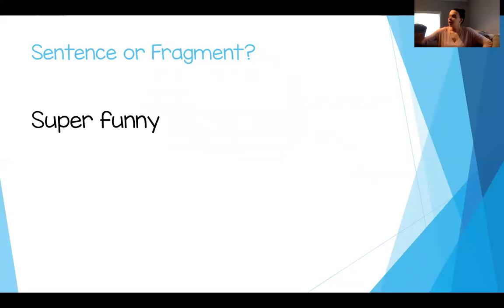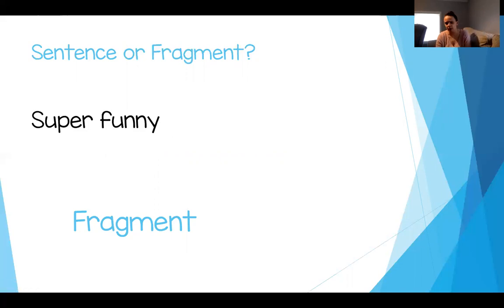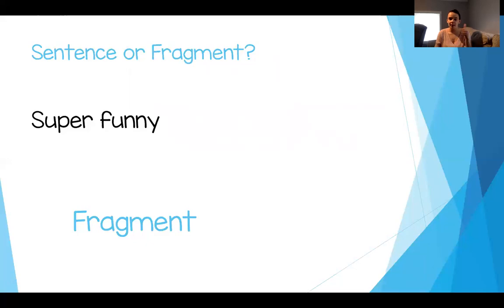Ready for the next one? 'Super funny.' Write on your paper 'sentence' or 'fragment' — pause me now. 'Super funny' is a fragment. There is no subject and there is no verb. 'Super' is not a doing word; it's not an action. 'Funny' is an adjective — that's not a doing word or a verb. There's no noun to tell you who or what you're talking about. If I walked up to you and said 'super funny,' you'd say, 'Miss Deacon, who are you talking about? Who's super funny? What is super funny?' You would be really confused. So that is a fragment.